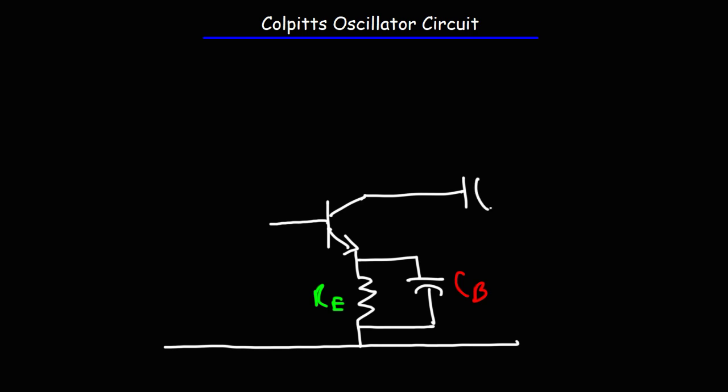We're going to have another bypass capacitor at the collector of the transistor. So this is the base, this is the collector, and this is the emitter.